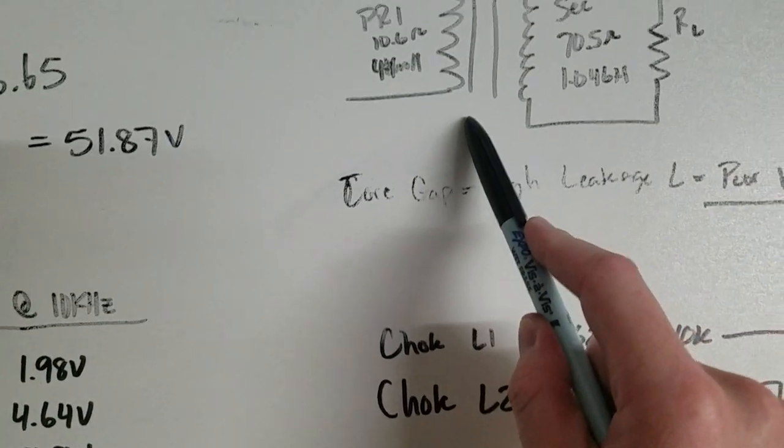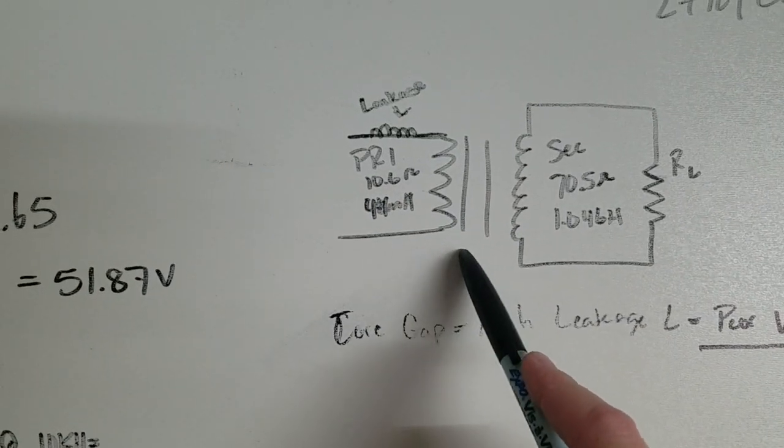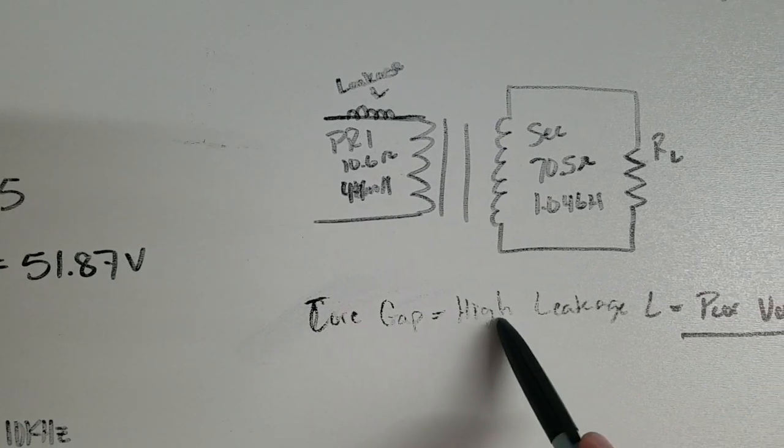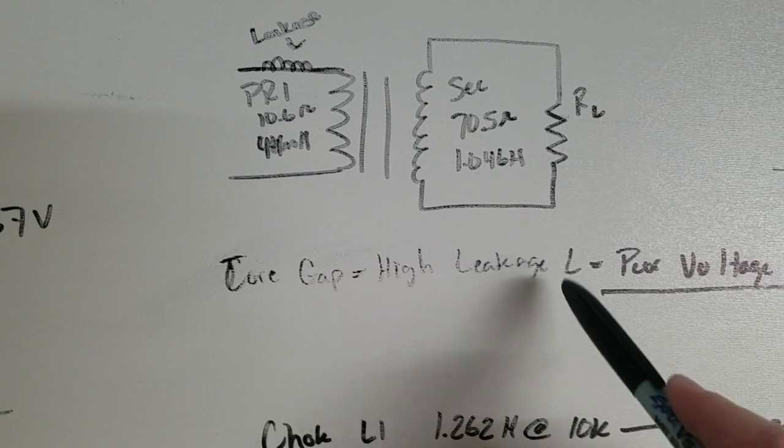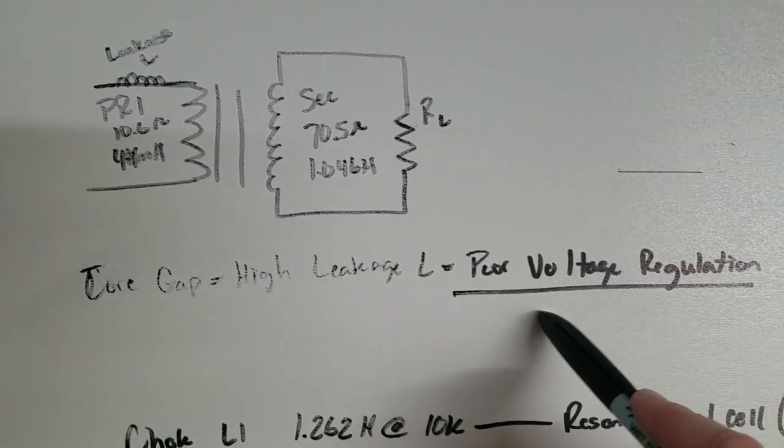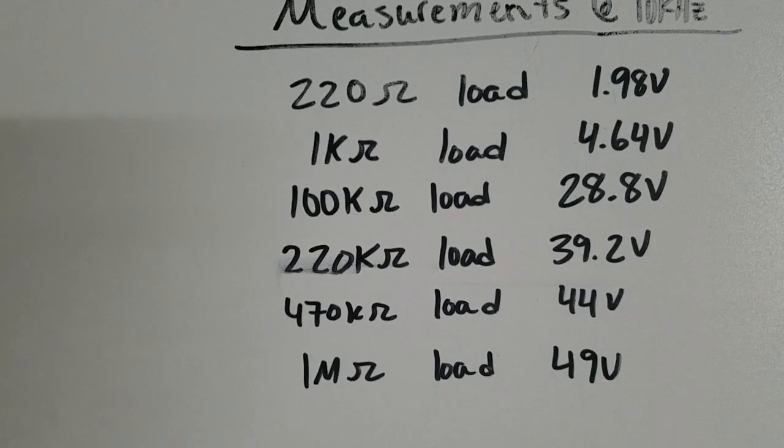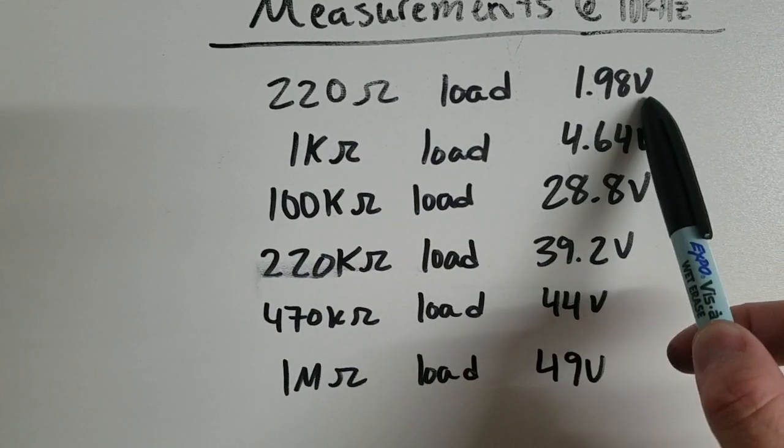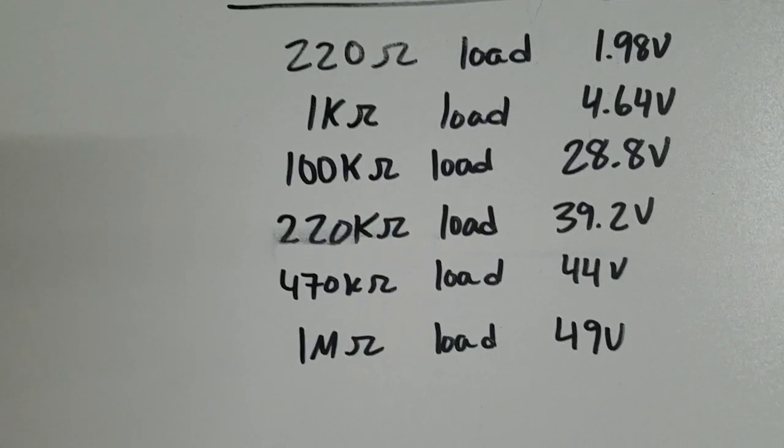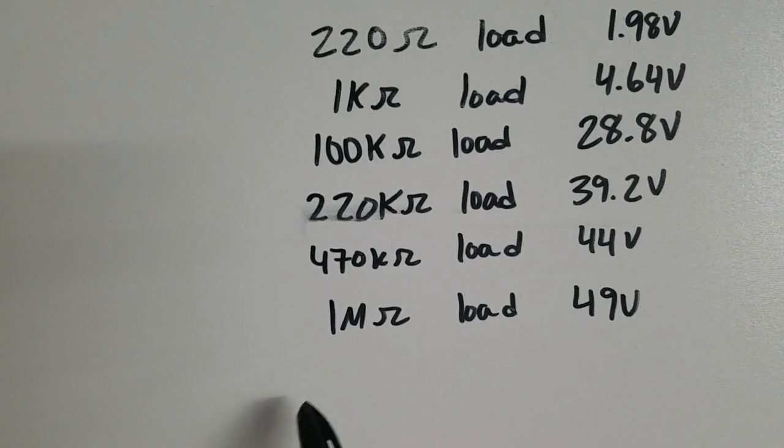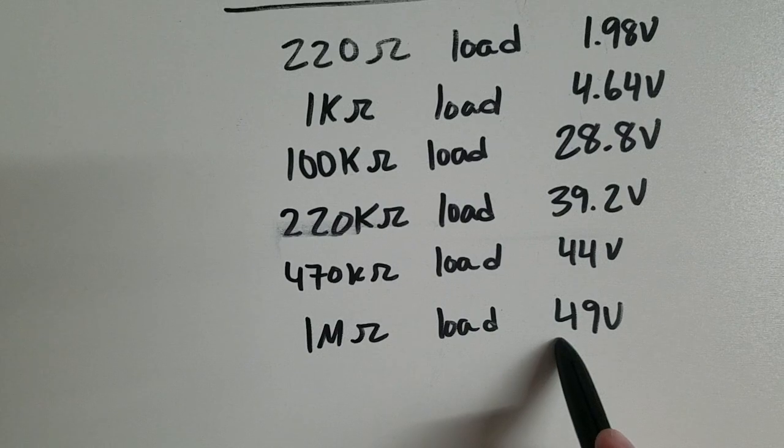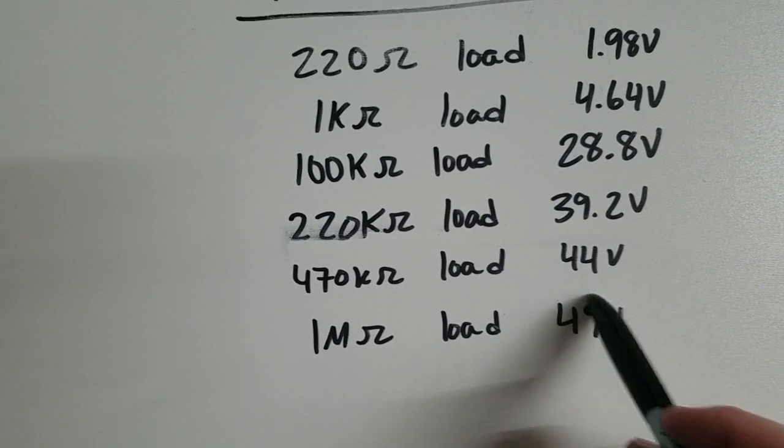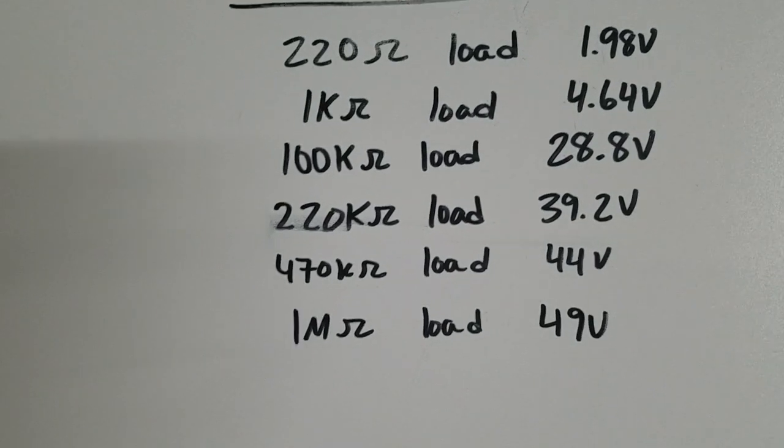But when you introduce a gap into the core, now you have a problem. The problem is leakage inductance, which gives you a very poor voltage regulation. What does that mean? That means just what I showed with the 220 ohm load, you only get about 2 volts across the load. It actually takes a 1 million ohm or higher load to get near the 52 volts that I should be seeing across it.